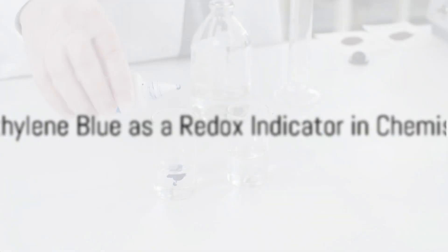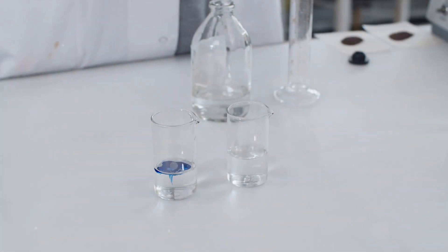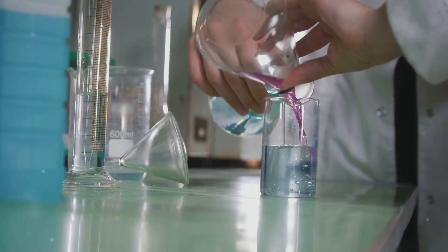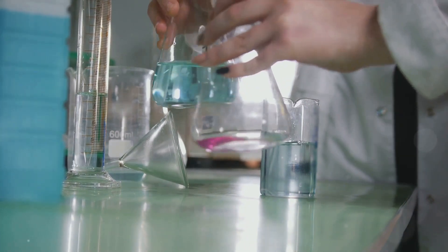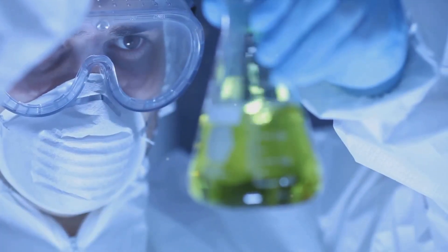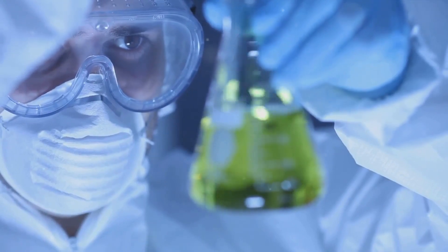In the world of chemistry, the use of methylene blue as a redox indicator is invaluable. It changes color based on the presence of certain elements, providing a visual guide for complex chemical reactions. This makes it an essential tool in laboratories around the globe.